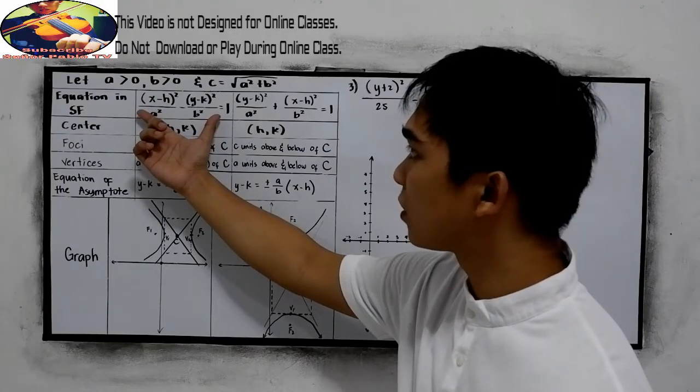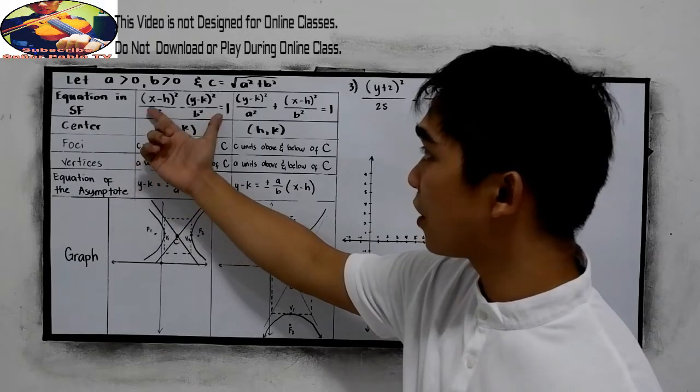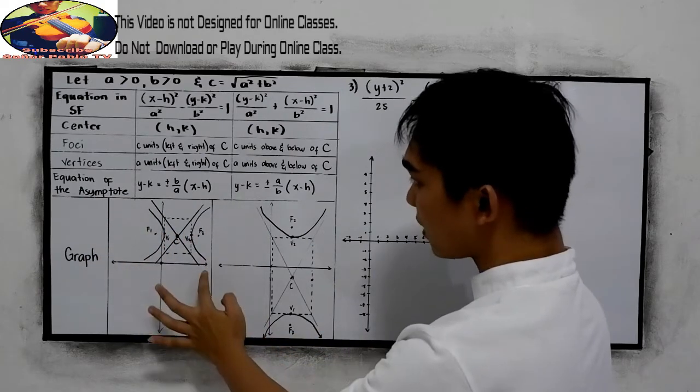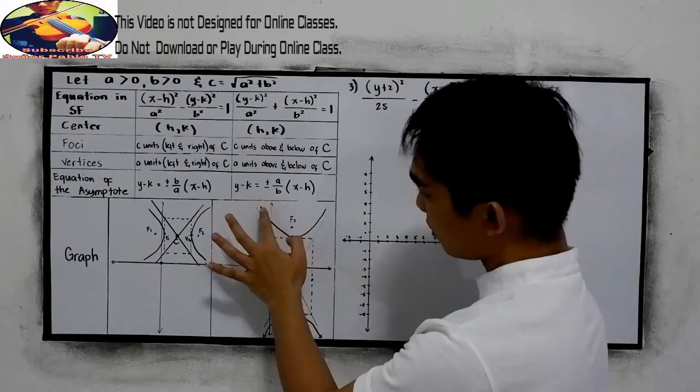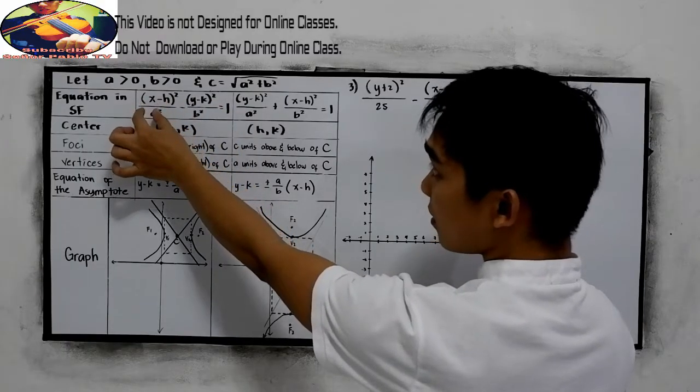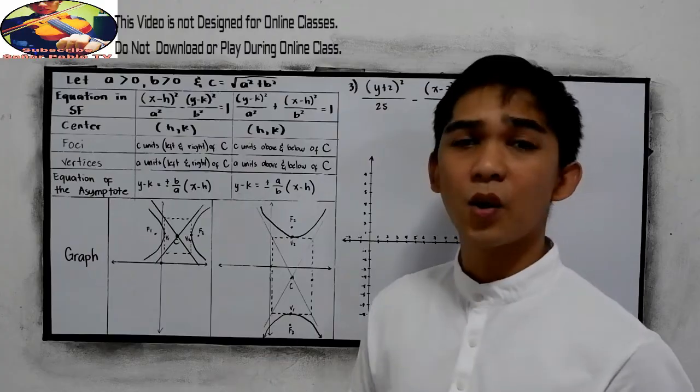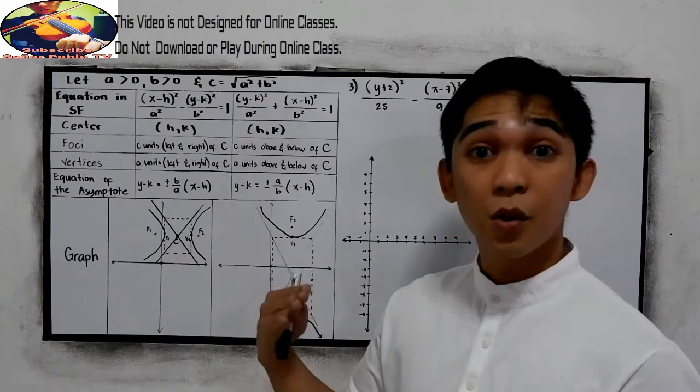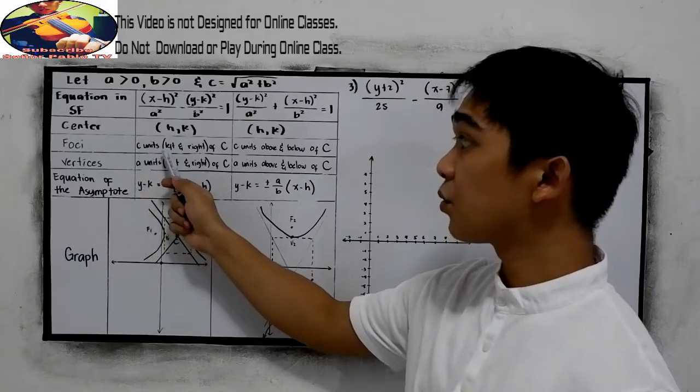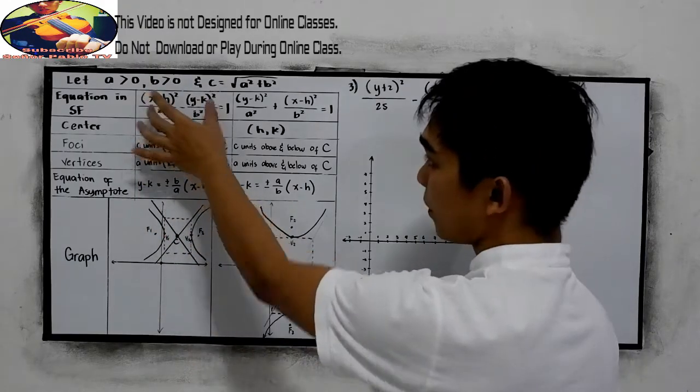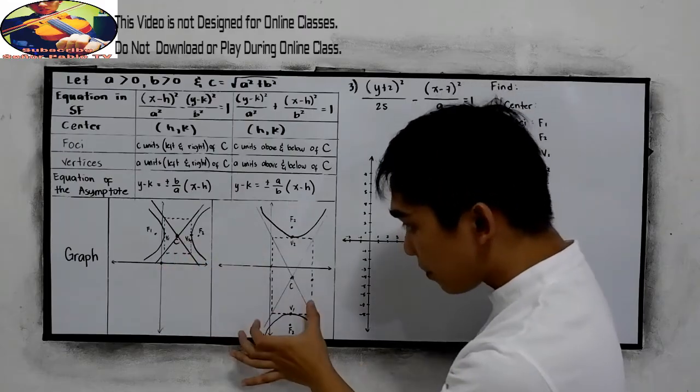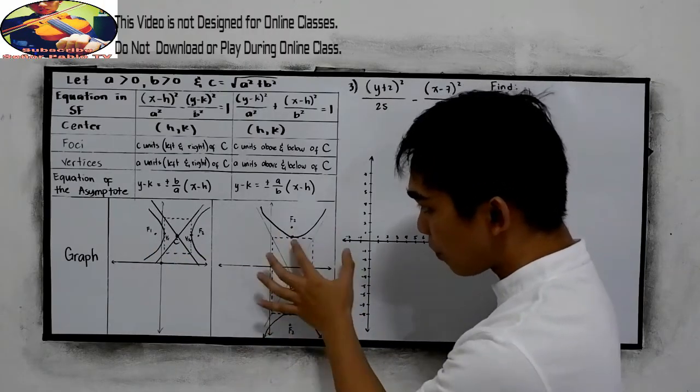So we have two cases, equation in standard form. So in this case, where our parabola opens to the left or to the right, and in this case, open upward and downward. So notice that it's just interchange y, that is in our a squared. Just like in our first discussion, examples number 1 and 2, it also applied at that.